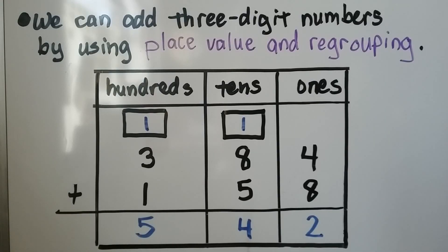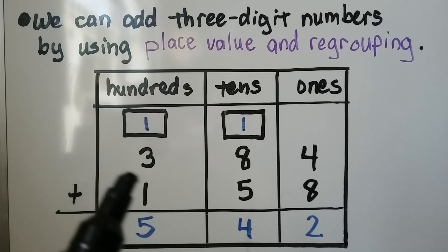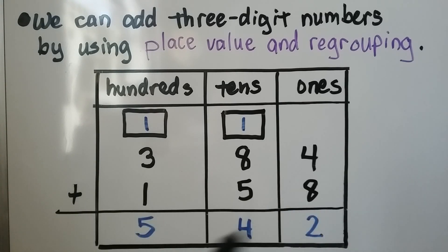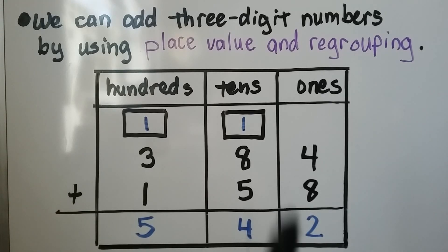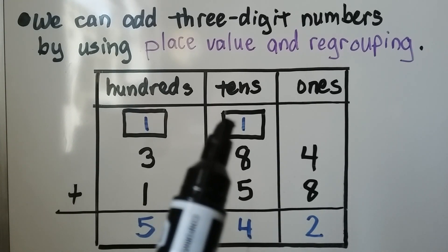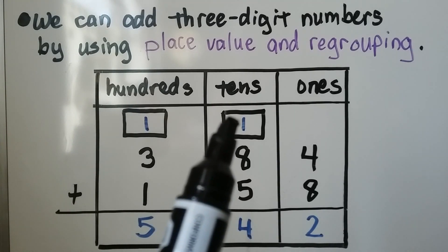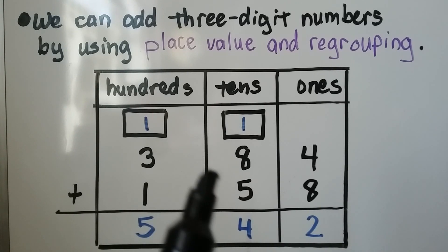We can add three-digit numbers by using place value and regrouping. We need to add 384 plus 158. We start with the ones place. We add the 4 and the 8, which is 12. 12 is one ten and two ones. We regroup the ten up here to the tens place.